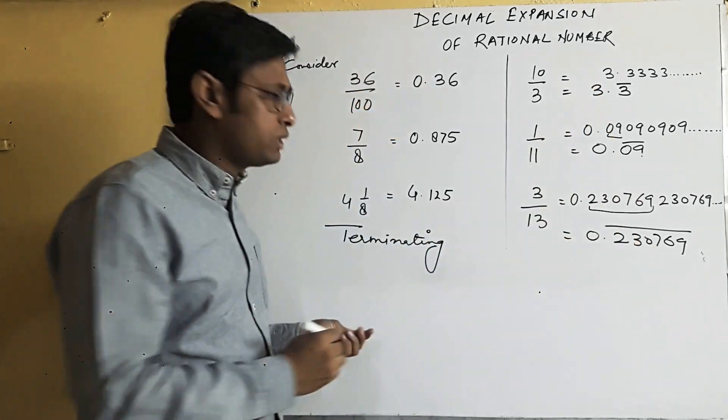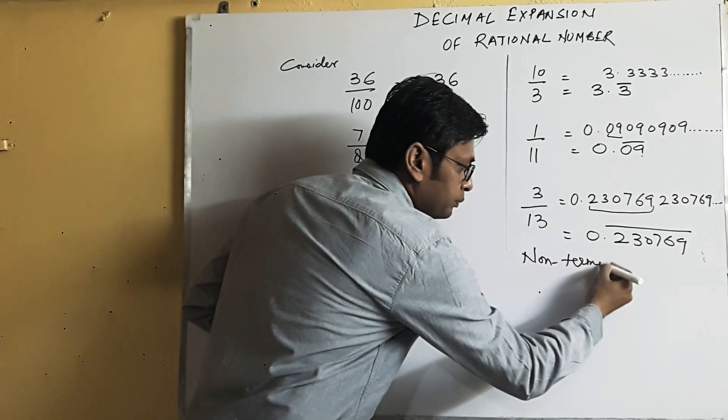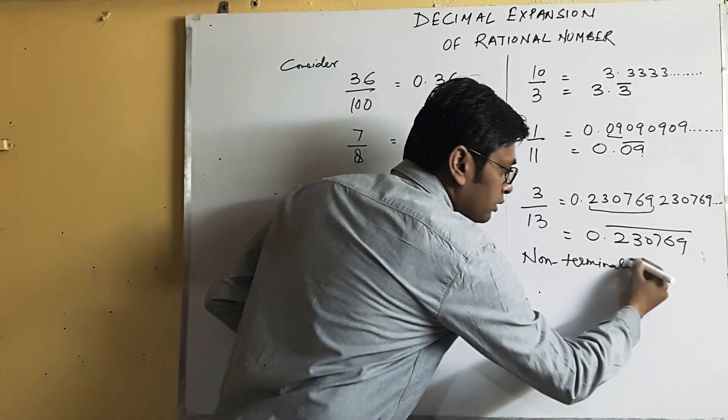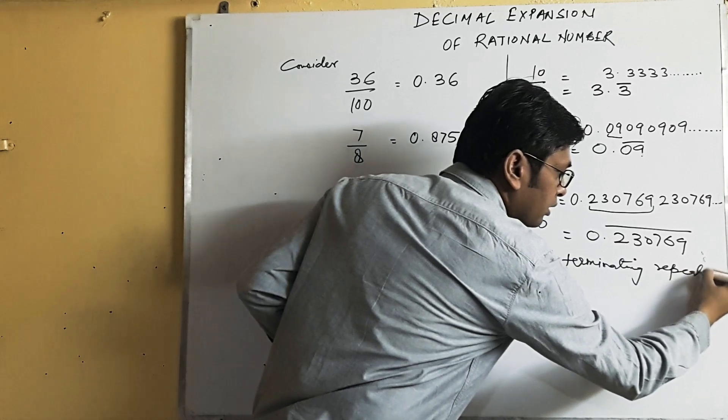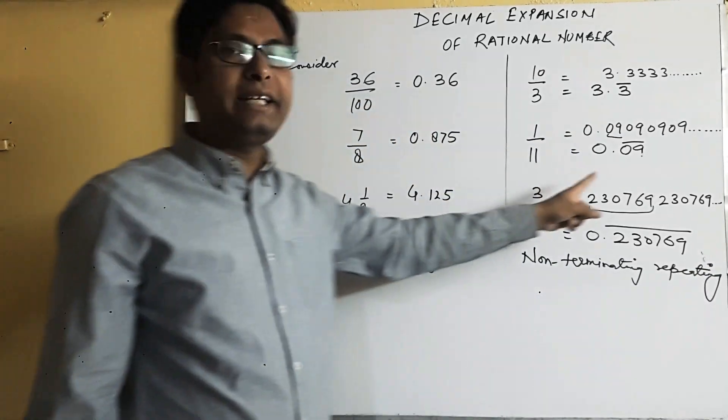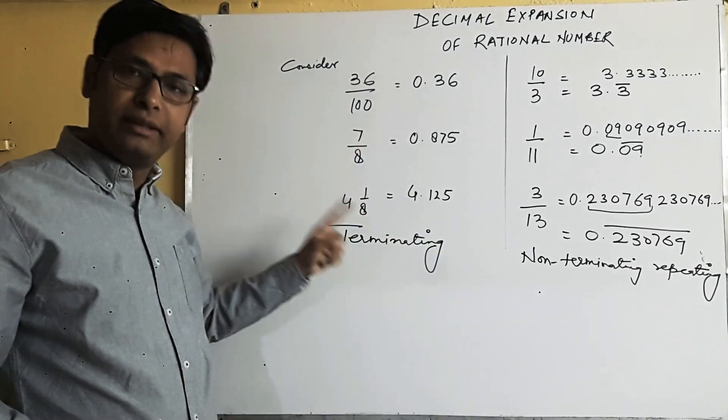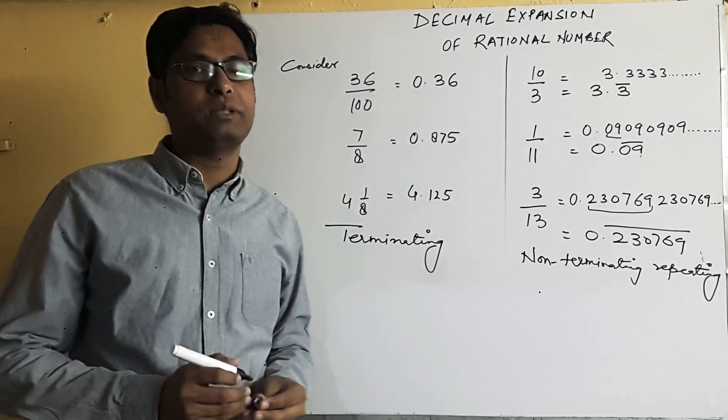So this type of decimal expansion is called non-terminating and repeating decimal expansion, and which comes to an end, this type of decimal expansion is called terminating decimal expansion.